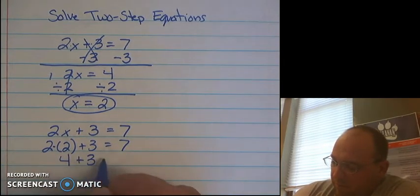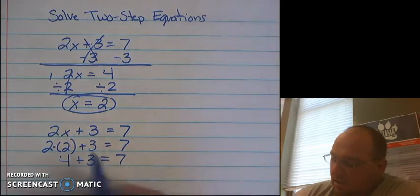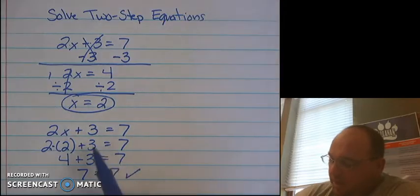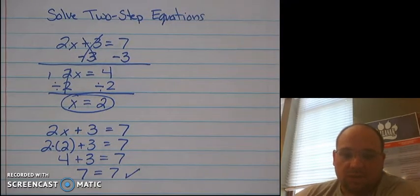So I have 4 plus 3 equals 7. And 4 plus 3 is 7. And 7 is equal to 7, which lets me know that my solution of 2 is correct.